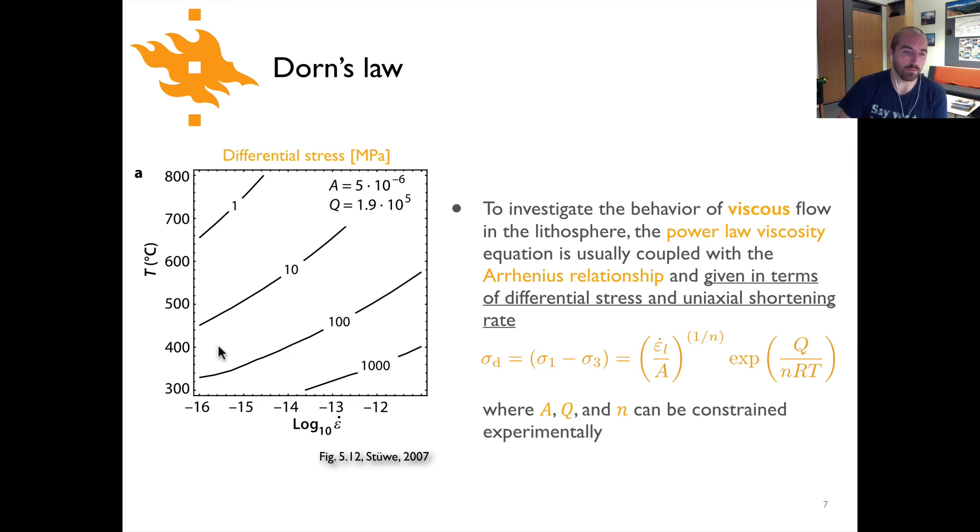If you were to hold a rock at a constant temperature and increase the strain rate in there, what you're going to see is that the stress within the rock is going to increase as well. So these contour lines are contours of the differential stress within the rock. And so if you're at 400 degrees and you went from 10⁻¹⁶ to 10⁻¹² per second, you're going to see increasing levels of stress within the rock.